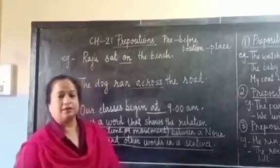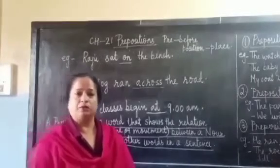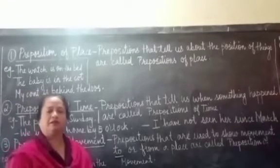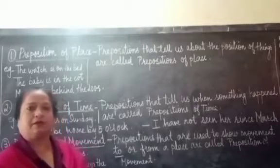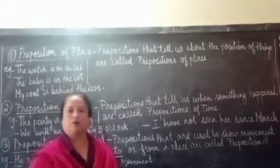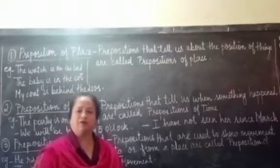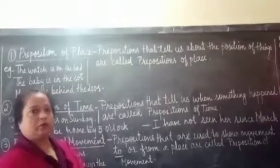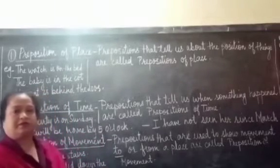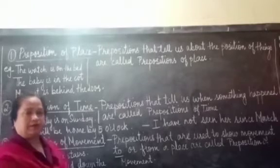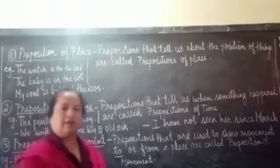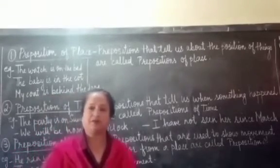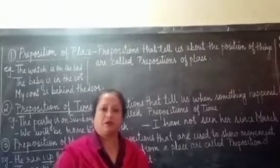Now let us discuss the different kinds of prepositions. Words that show us the movement, time, or place — showing the relationship between a noun or pronoun and other parts of the sentence — are known as prepositions. We will be discussing three kinds: preposition of time, preposition of place, and preposition of movement.